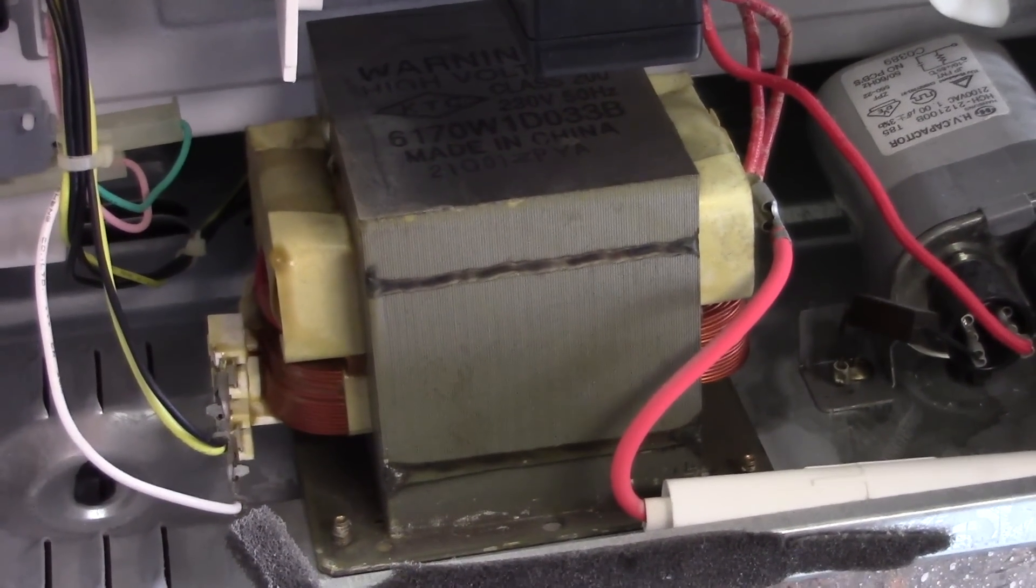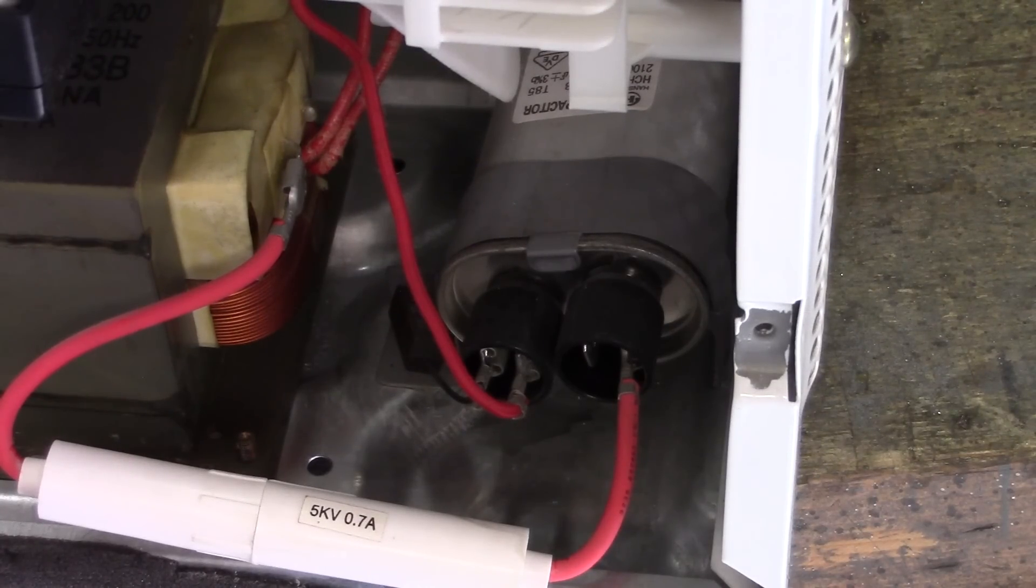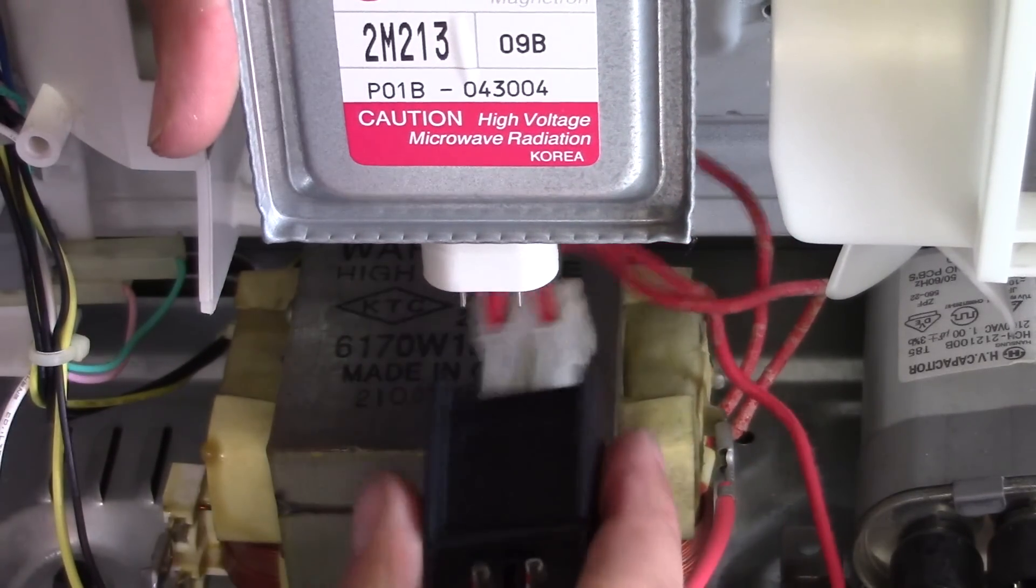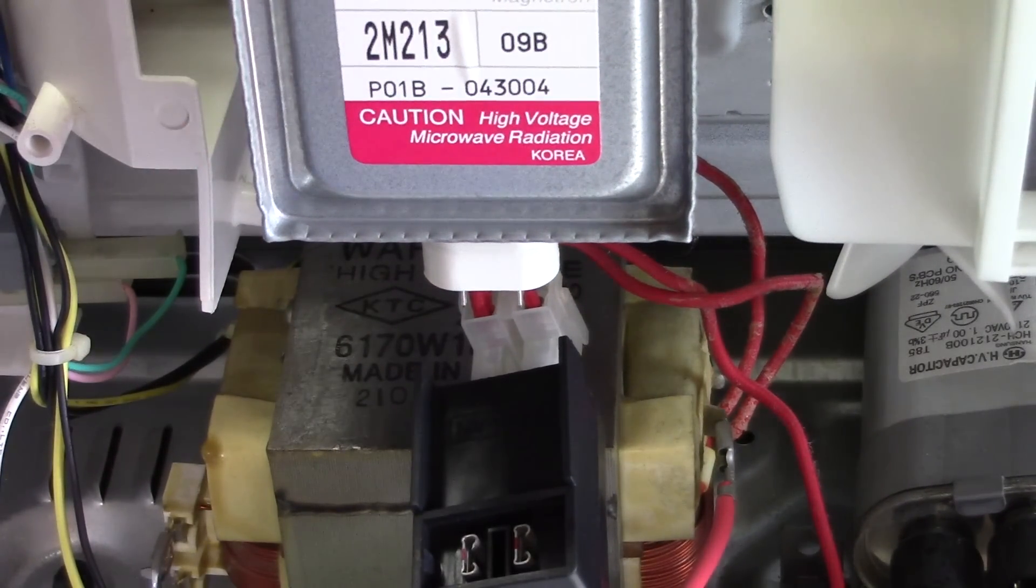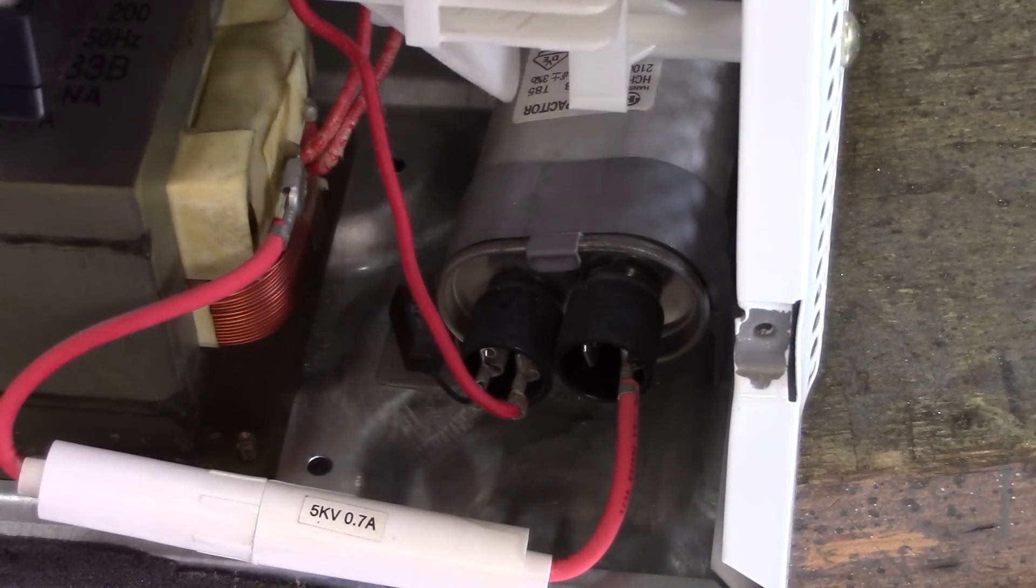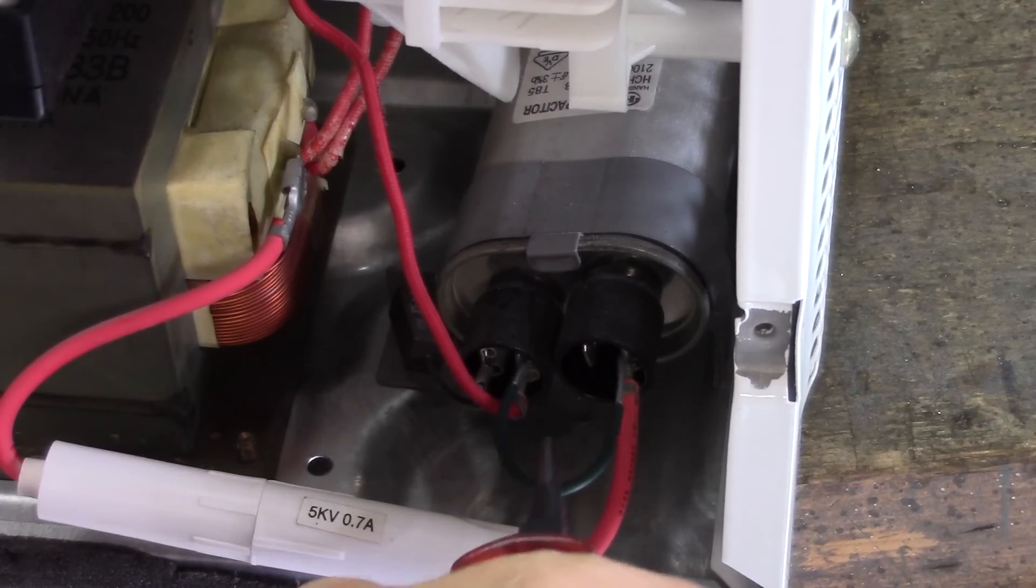So now let's remove it. In order to remove the transformer we first need to disconnect it from the other components. Before we disconnect the wires that are connected to the capacitor however, make sure the capacitor is discharged by shorting it using a piece of wire.